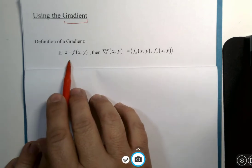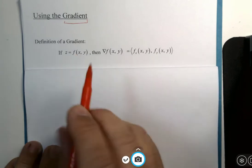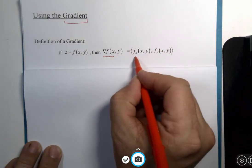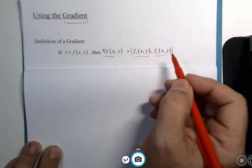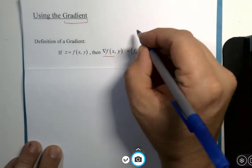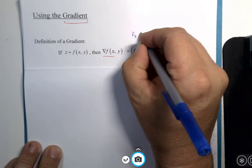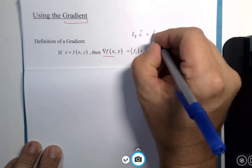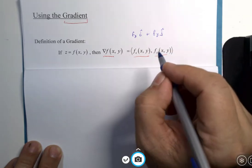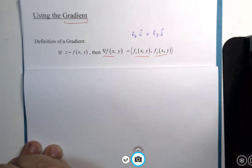Just a reminder that if we have a function, in this case of two variables, the gradient is the vector of partial derivatives. And for those of you that miss your i, j, and k, it's the x partial derivative times i and the y partial derivative times j. And if we had three variables, there would be a k component as well.